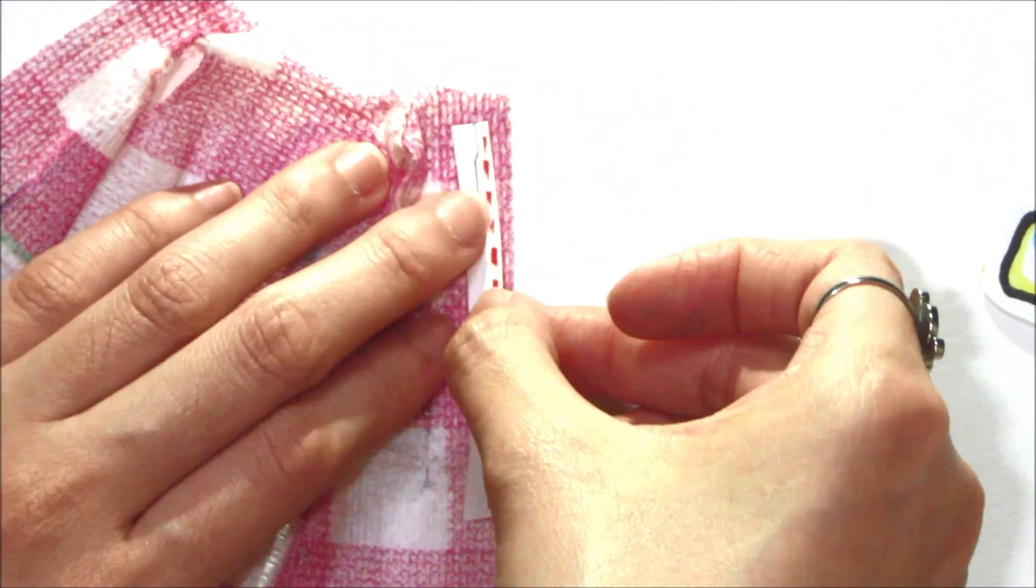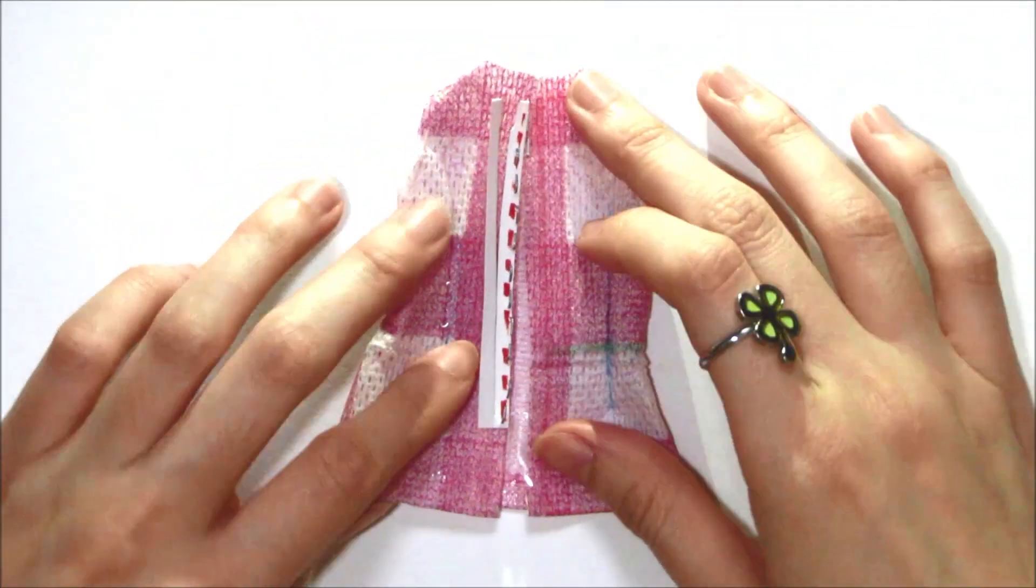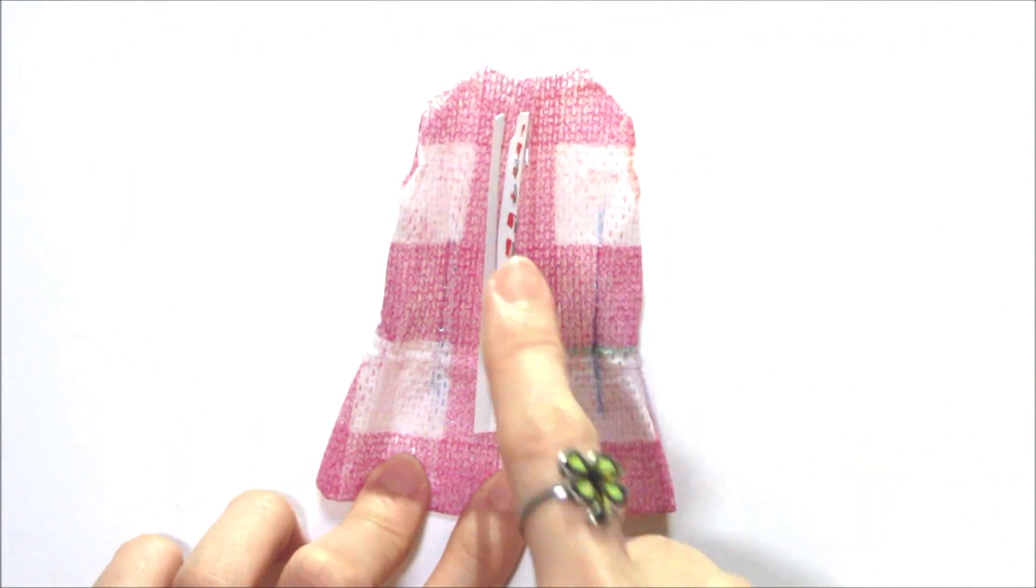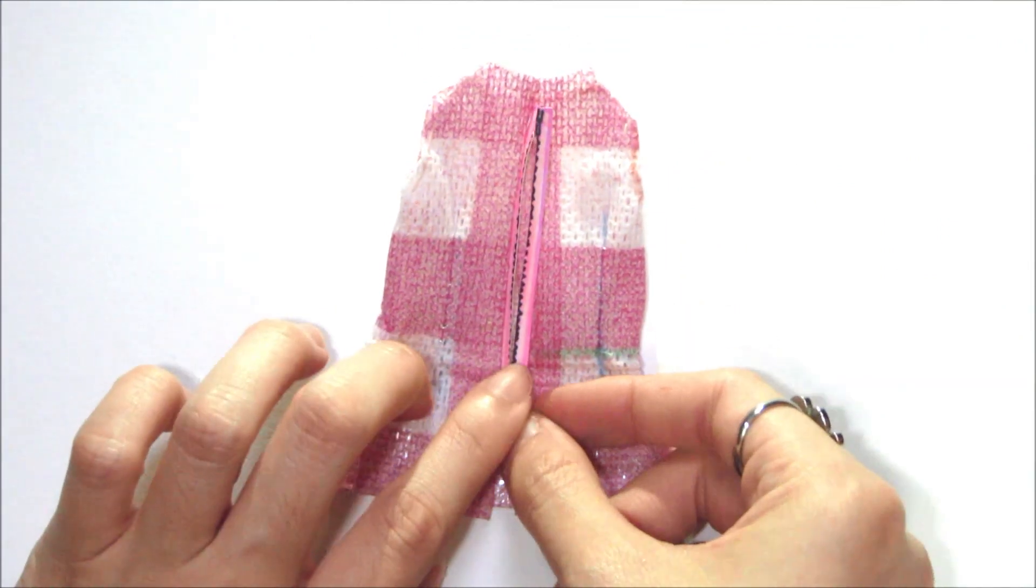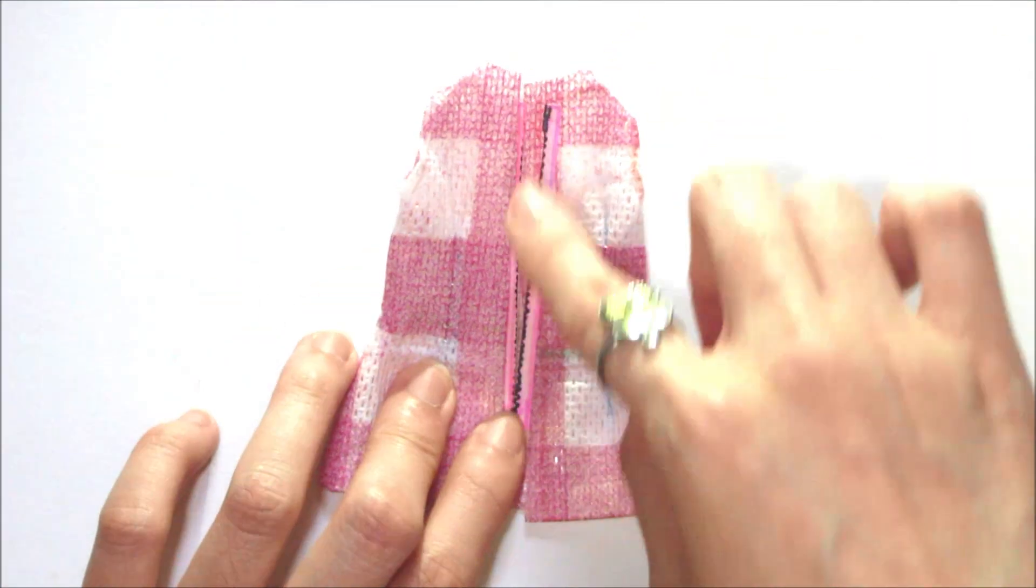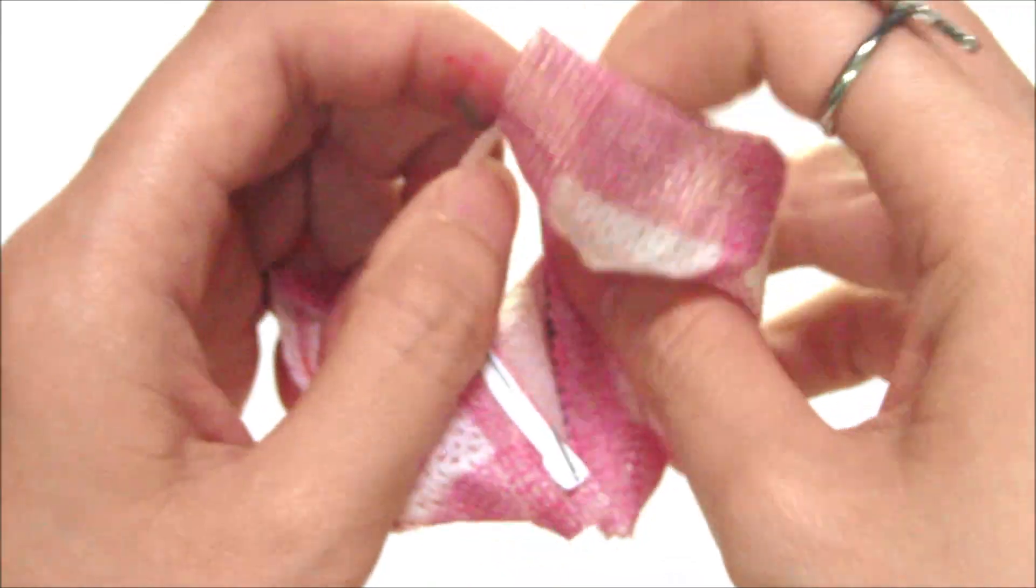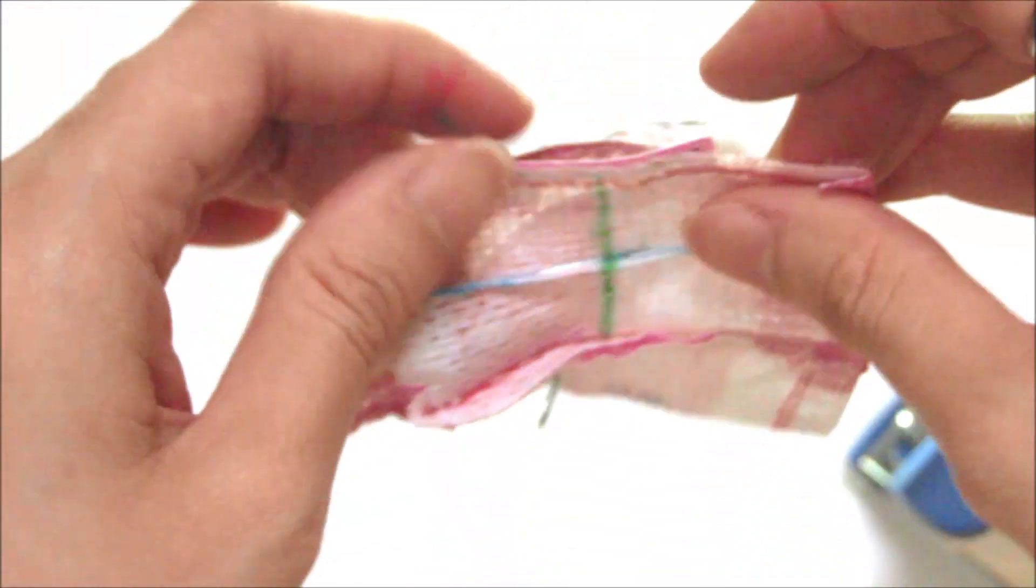So we attach it to the side and sew it down. This is how it looks like with one side of the zip sewed on. So we'll flip the zip over and attempt to sew the other side. So usually it's easier when you flip your costume inside out and try to sew the other side.